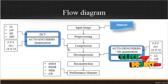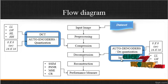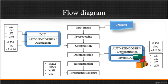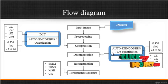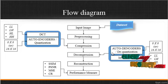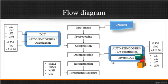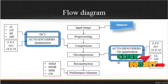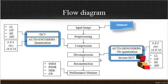After the compression, the decompression is carried out. The first step in decompression is the auto-decoders and de-quantization, which perform the reverse process of the encoder and quantization. After the de-quantization, the inverse DCT is carried out, and the decompressed image is reconstructed by this module.